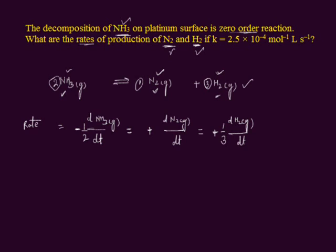The question states that the decomposition of ammonia is a zero-order reaction. In a zero-order reaction, the rate of reaction does not depend on the concentration of the reactant. This means the rate of reaction is equal to the rate constant k. The rate is equal to k = 2.5 × 10⁻⁴, with units of moles per liter per second.